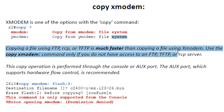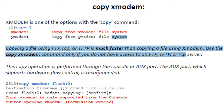This is directly from the Cisco documentation: copying a file using FTP, RCP, TFTP, or any other transfer protocol is going to be much faster than copying a file using Xmodem. Use the Xmodem command only if you do not have access to any of these other file transfer methods. The copy operation is performed through the console or auxiliary port. The aux port, which supports hardware flow control, is recommended.